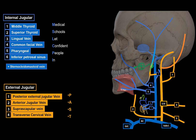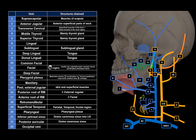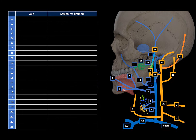That covers all the veins I wanted to go through. I've made a table covering all these veins along with the structures they drain. Now the video gets challenging — I'm going to make all the names disappear, and you should be able to tell me: what is the name of vein number 1, what is the name of vein number 2, what does number 3 drain, and what does number 4 drain? If you can do that, then I've successfully helped you with this topic. Until next time.